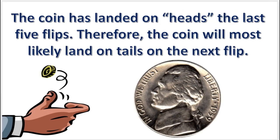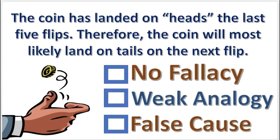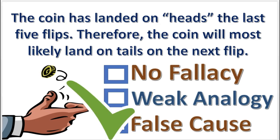Next practice problem. What fallacy is committed in this argument? Press pause. The answer will appear in 3, 2, 1. False cause. This is the gambler's variety of the fallacy. Tosses of a coin are not causally related.